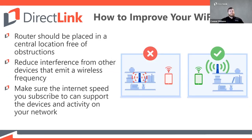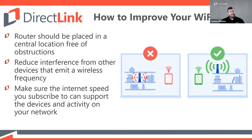I want to share a couple of quick tips for improving your Wi-Fi signal. First, the router should be placed in a central location free of obstructions — we don't want the router hidden behind books or objects that could block the Wi-Fi signal from reaching where it needs to be. Even on the 2.4 GHz band, obstructions can limit the Wi-Fi signal experience. Next, try to reduce interference from other devices that emit a wireless frequency — the new Direct Link routers will help manage this for you automatically.